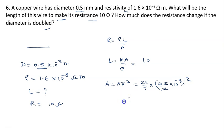So this will be 22 by 7 into 0.5 divided by 2 into 10 raised to the power minus 3 into 0.5 divided by 2 into 10 raised to the power minus 3.